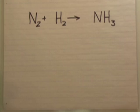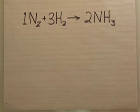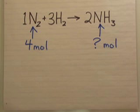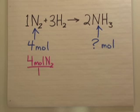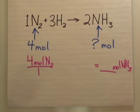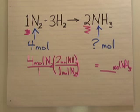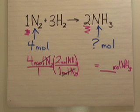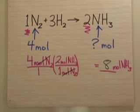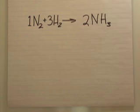Let's knock out a couple of stoichiometry problems. Here's our balanced equation — coefficients 1, 3, and 2. We're given 4 moles of nitrogen and want to find how many moles of ammonia that gives us. Start with 4 moles of nitrogen over 1. We want moles of ammonia in the numerator, so put moles of nitrogen in the denominator so they cancel. The mole ratio is 2 moles of ammonia for every 1 mole of nitrogen. Units of nitrogen cancel, leaving moles of ammonia. Always write down your units and make sure they cancel.